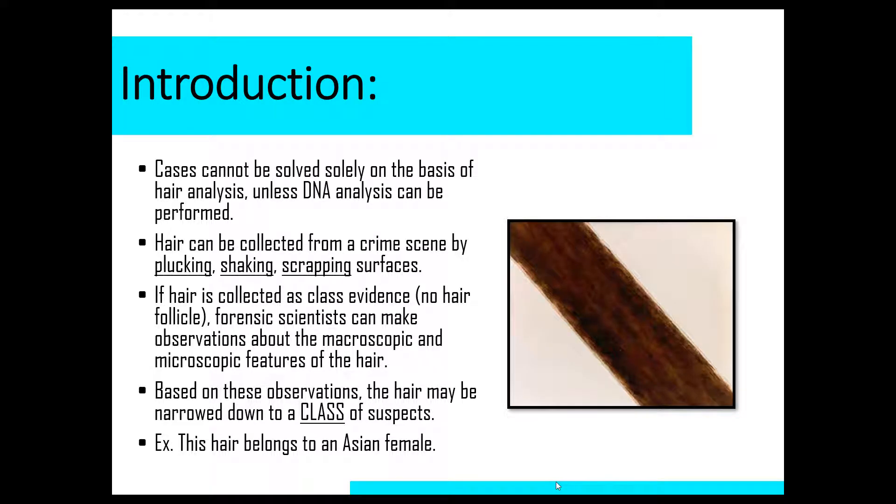If hair is collected as class evidence, which remember means no follicle, then forensic scientists can make observations about the macroscopic and microscopic features of the hair. Based on these observations, the hair can be narrowed down to a class of suspects. If you look at the picture on the screen, macroscopically I can see this is a darker hair, it is very straight, and I don't see the presence of a medulla, but that may be just the image. So what we could note are some things that may lead us to believe that this hair belongs to an Asian female, although it's kind of hard to tell from this picture.